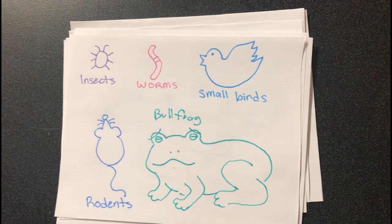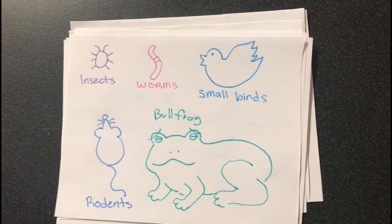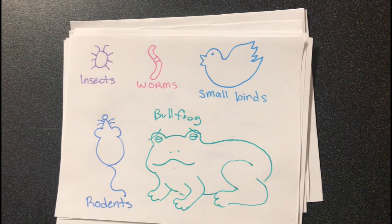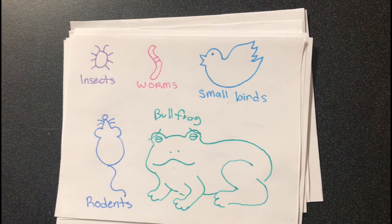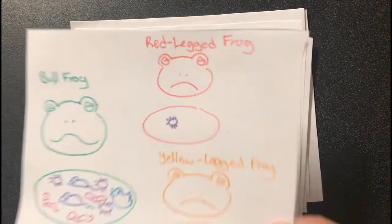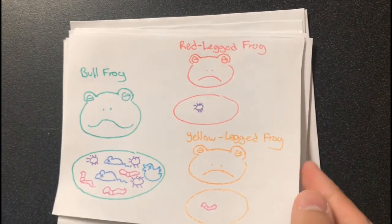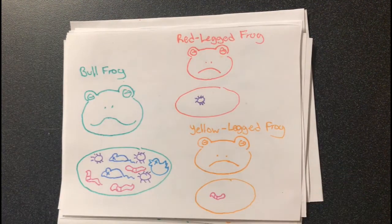This creates a problem for our native species, as the two groups share a similar diet. The yellow-legged or the red-legged frog may live alongside the invasive newcomer, but the bullfrogs are able to out-compete native species in the race for food at all stages of their life cycle.